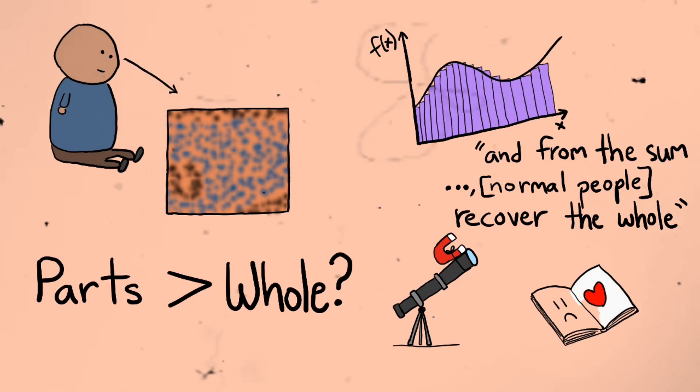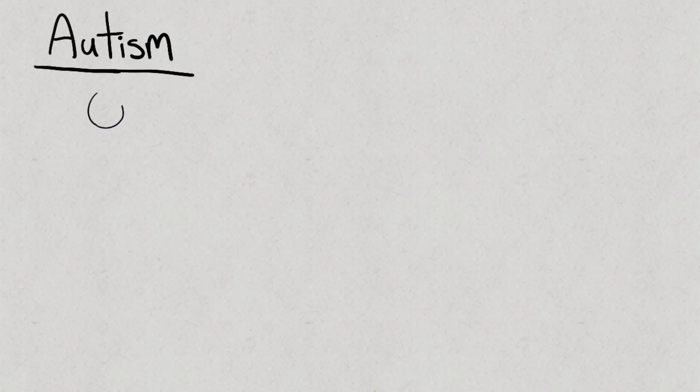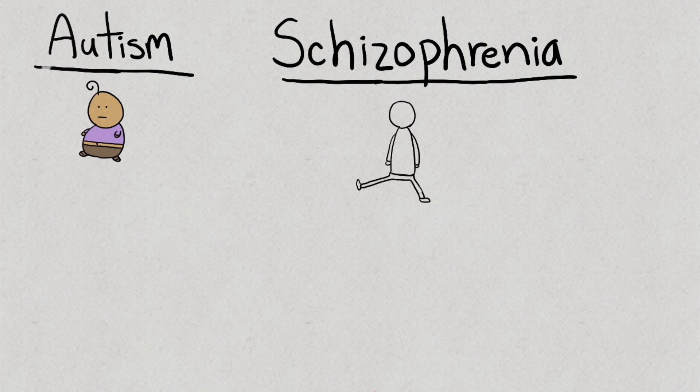While there was a time when autism was debated as being childhood schizophrenia, these diseases are now considered distinct. Autism is early onset and rooted in the early development of the brain, while schizophrenia tends to first show in late adolescence and early adulthood, corresponding with later brain development.